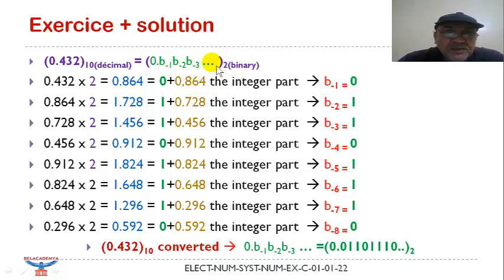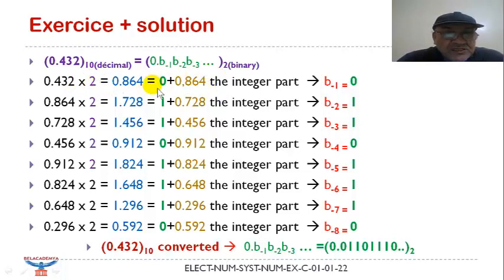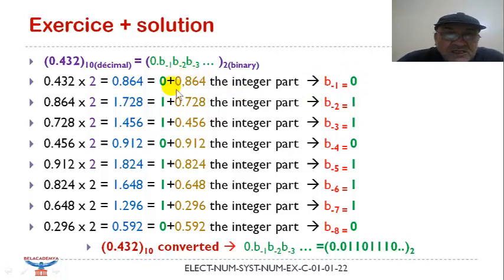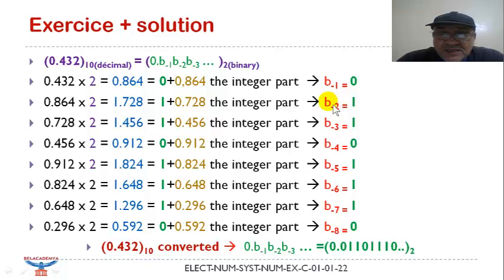We take this fractional decimal number; our base is 2. We multiply it by 2 and obtain a number in which the integral part is 0, so B minus 1 is equal to 0. We take the fractional part and multiply it by 2; it gives a number in which 1 is the integral part, so B minus 2 is equal to 1.